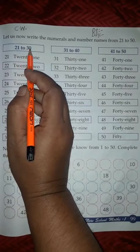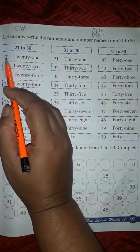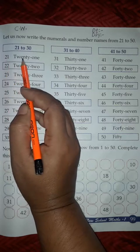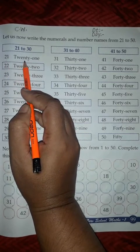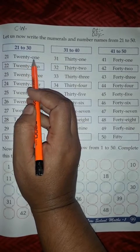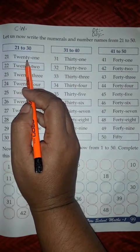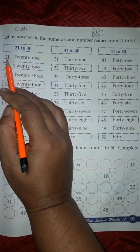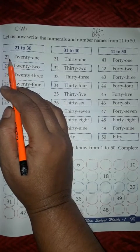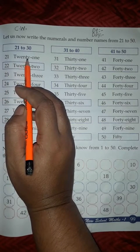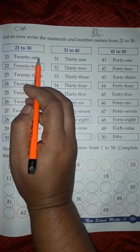21 to 30. First, 21. What is the numeral? What is the number name? TWENTY-ONE. 21 is the numeral, TWENTY-ONE is the number name.